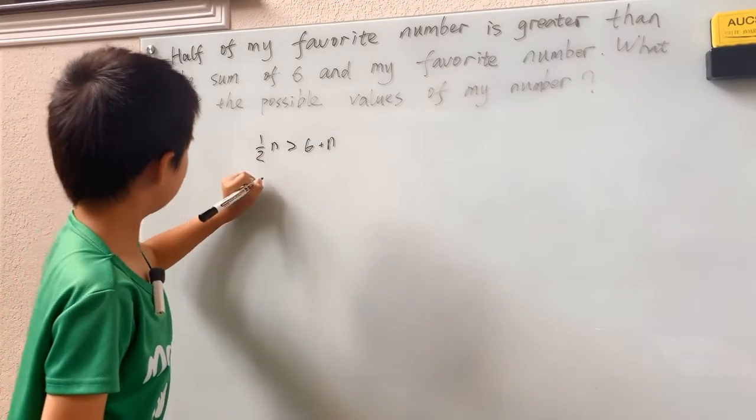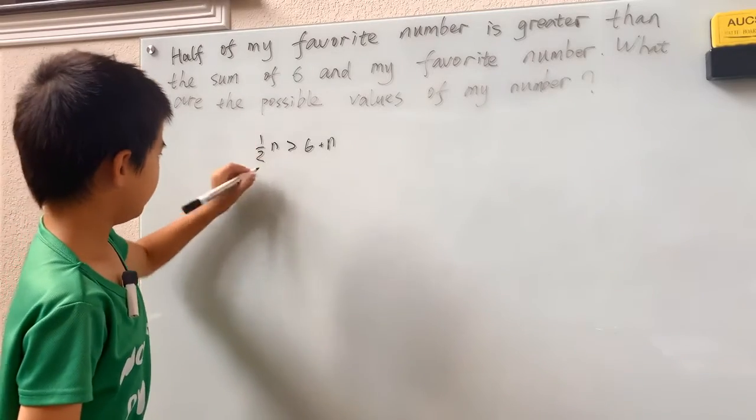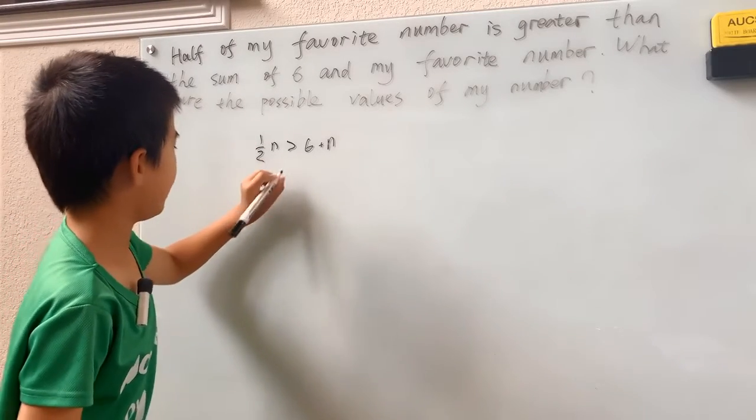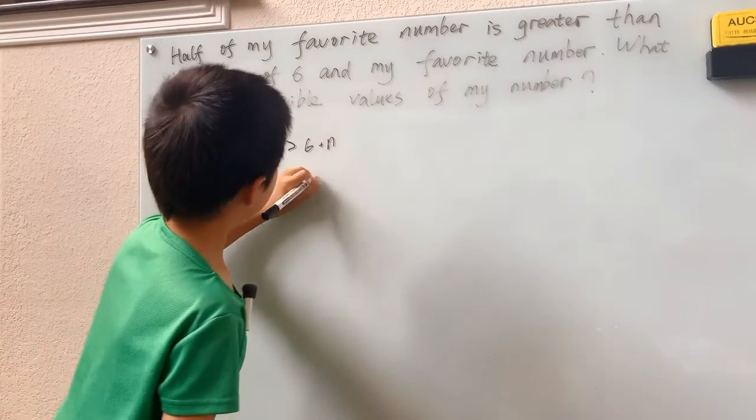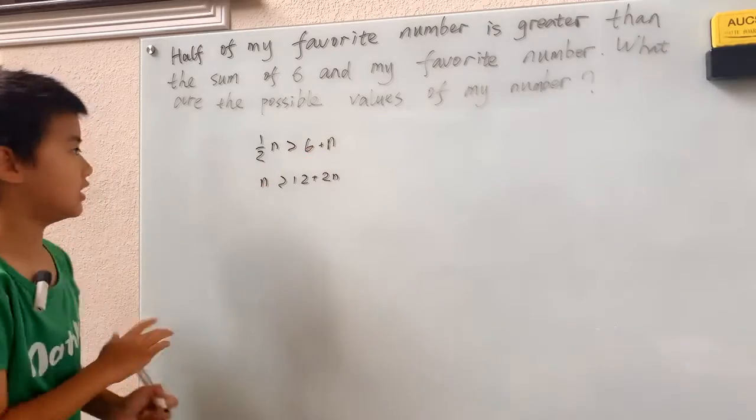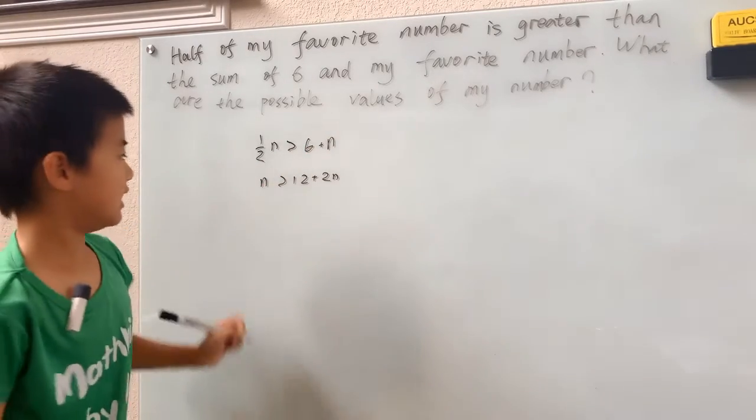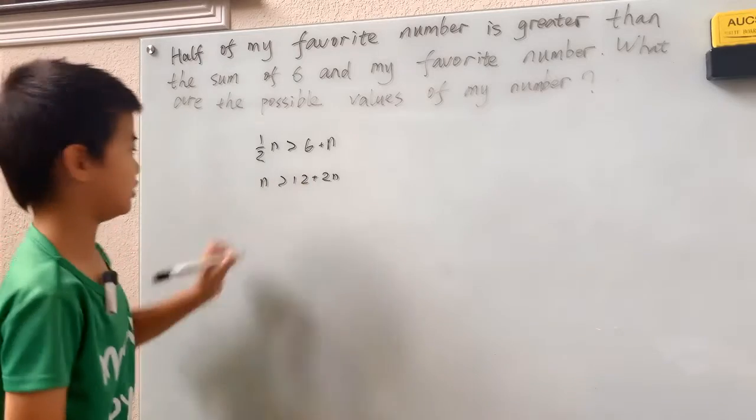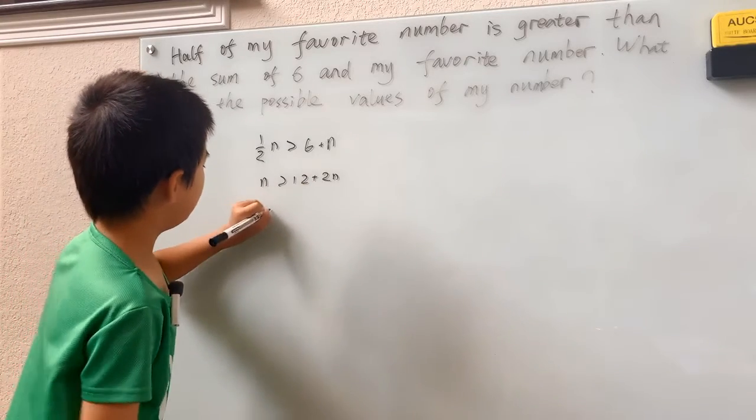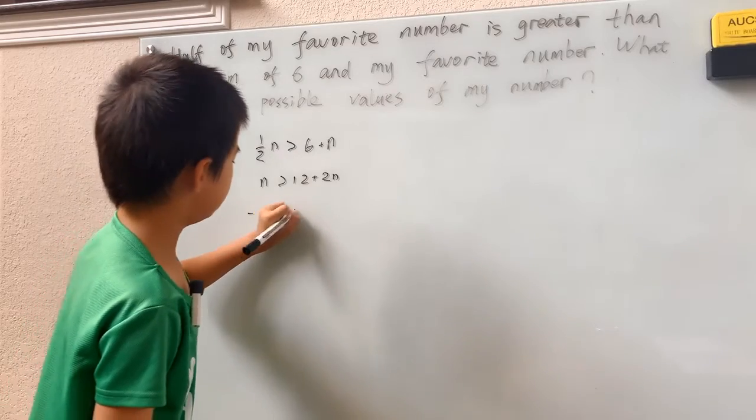So anyways, just keep things simple. Multiply by two. Here the two cancels. We just have n is greater than 12 plus 2n. And remember, that's a plus sign. I'm going to multiply both of these by two. And subtracting n from both sides, subtracting 12 from both sides, we have negative 12 is greater than n.